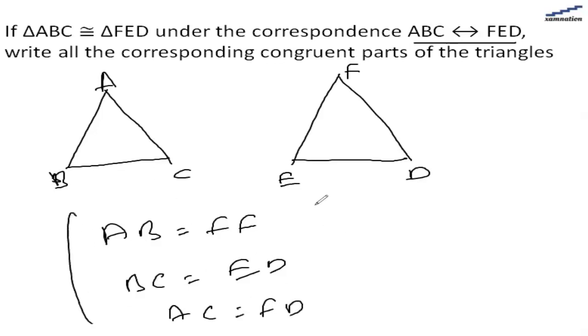These sides will be equal because these triangles are congruent. Also these angles will also be equal, so angle A will be angle F, angle B will be equal to angle E, and angle C will be equal to angle D. Thank you.